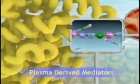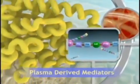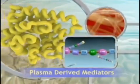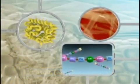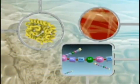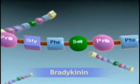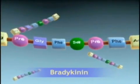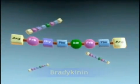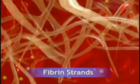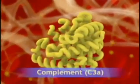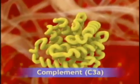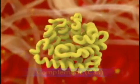The three major plasma-derived mediators are present in the plasma in precursor forms that must be activated, usually by a series of proteolytic enzymes. The kinins increase capillary permeability and stimulate pain receptors. The clotting system traps exudates, microorganisms, and foreign bodies. The complement cascade causes vasodilation, promotes leukocyte chemotaxis, and augments phagocytosis.